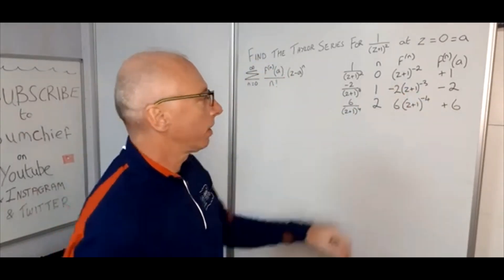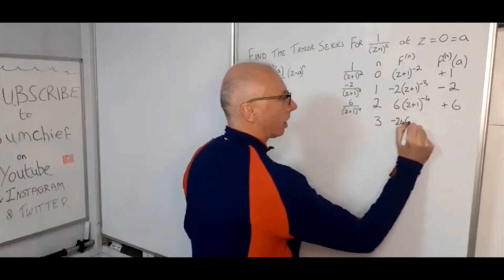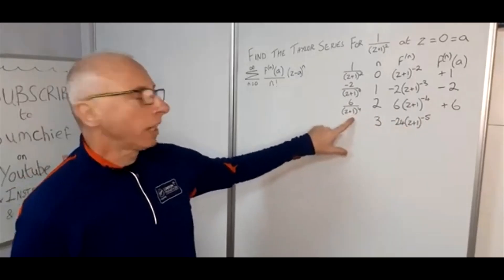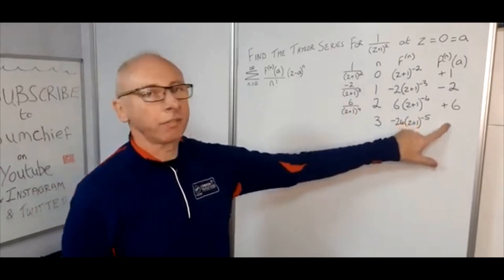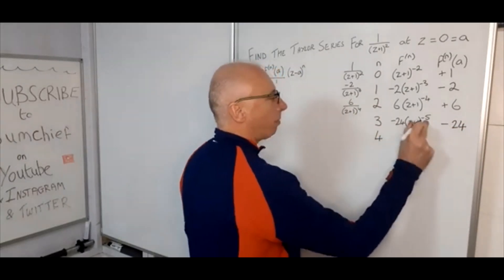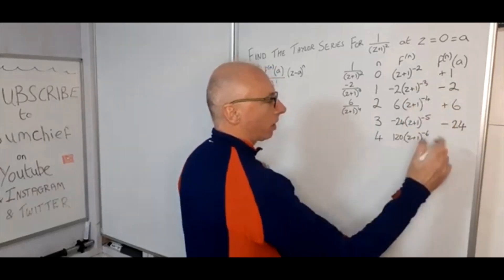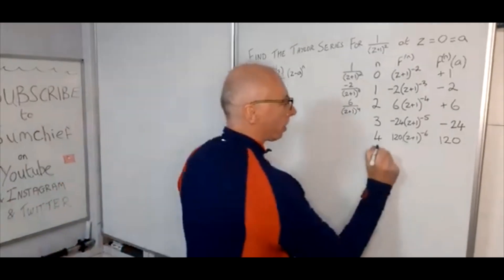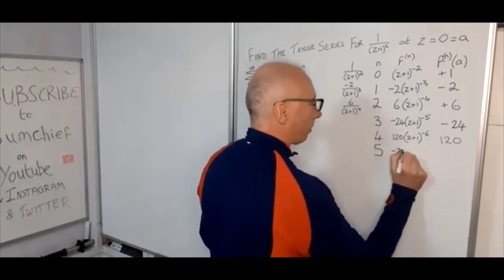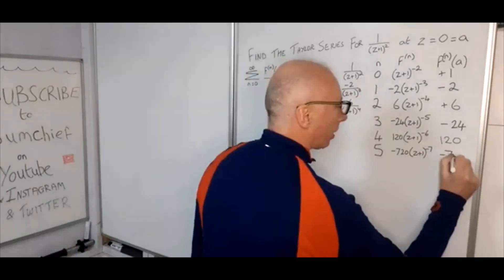For n equals 3, minus 4 times 6 gives minus 24, leaving (z+1)^(−5), so the value is minus 24. For n equals 4, minus 5 times minus 24 is 120, giving (z+1)^(−6), so the value is 120. For n equals 5, minus 6 times 120 is minus 720, giving (z+1)^(−7), and the value is minus 720.